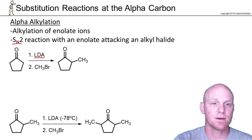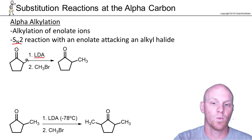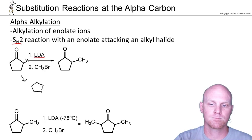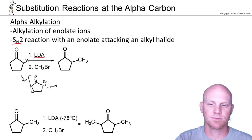The first step here is simply going to be deprotonating one of your alpha hydrogens — you're going to form that enolate again. I'll show both resonance structures for the enolate.